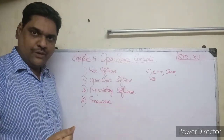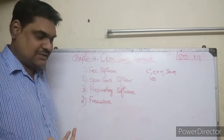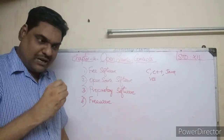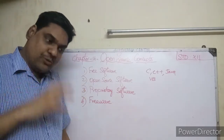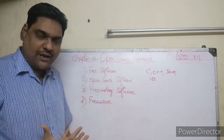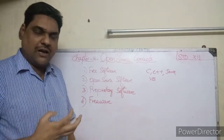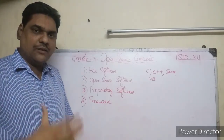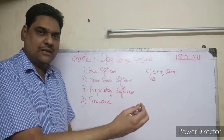Binary code is what the computer understands. Programs written in high-level languages have a source code, and users can do some modifications to that code.